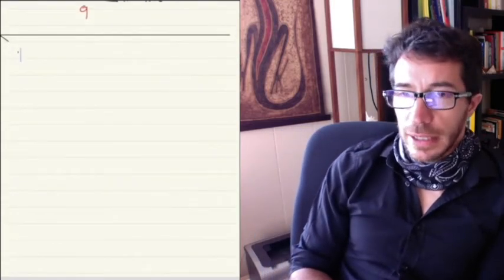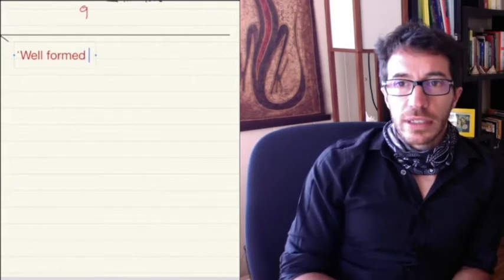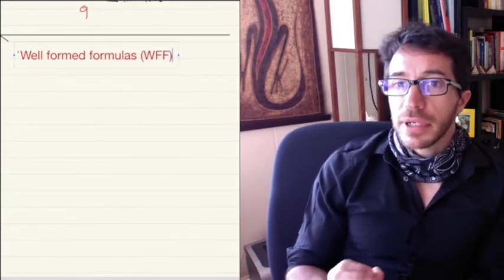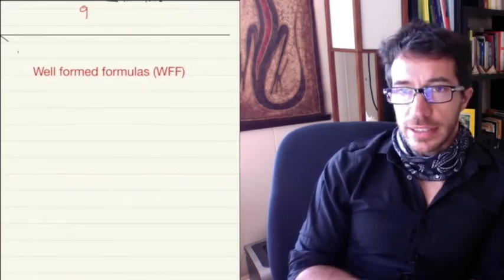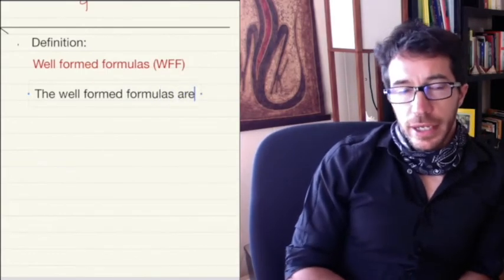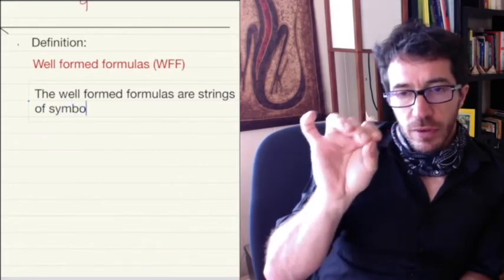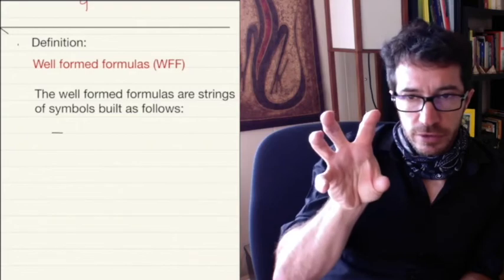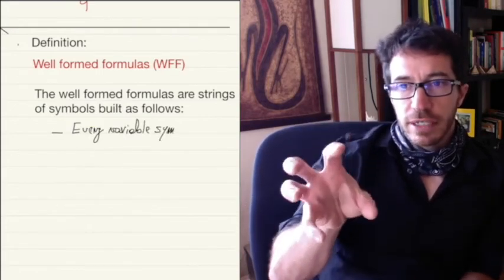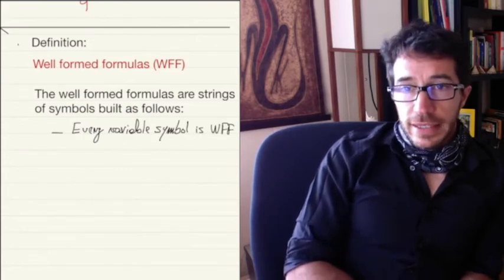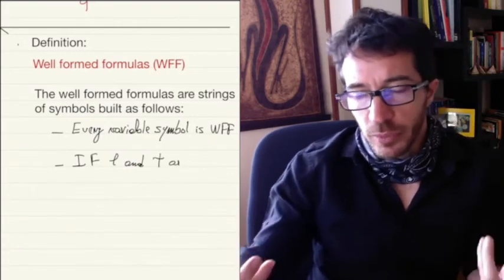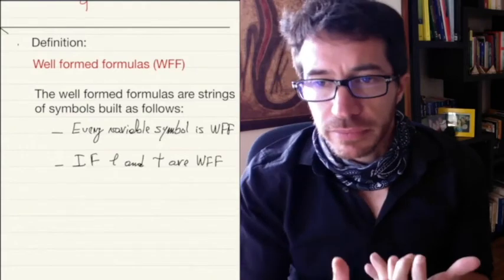These valid expressions are going to be called well-formed formulas. The ones that are valid are going to be called well-formed. The well-formed formulas are strings built in one of the following ways. First, all the variables A1, A2, A3, by themselves, each forms a well-formed formula — a single variable by itself is a well-formed formula. Then, if you have two well-formed formulas phi and psi that you've already built, from them you can build new well-formed formulas.